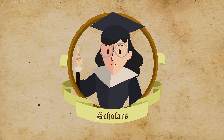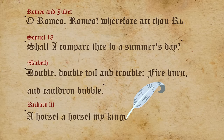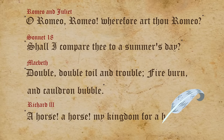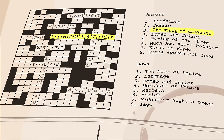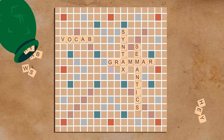Most Shakespeare scholars dismiss these theories based on historical and biographical evidence. But there is another way to test whether Shakespeare's famous lines were actually written by someone else. Linguistics, the study of language, can tell us a great deal about the way we speak and write by examining syntax, grammar, semantics, and vocabulary.